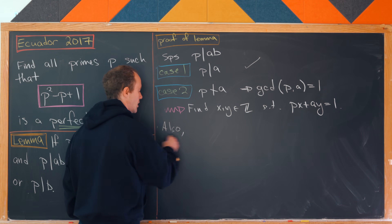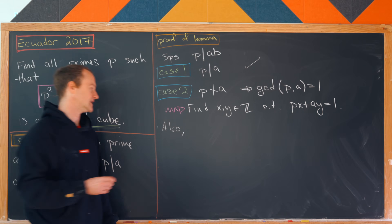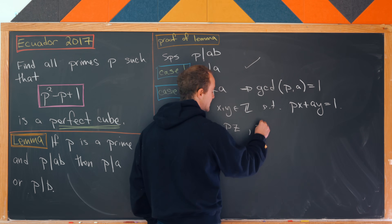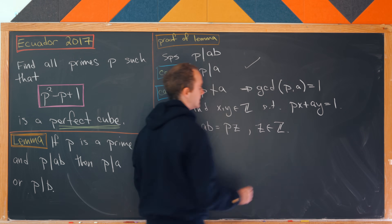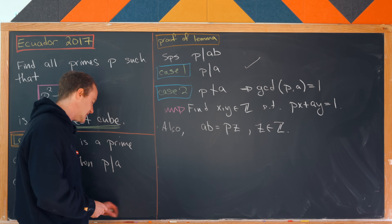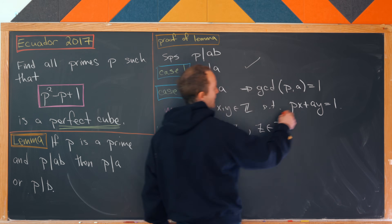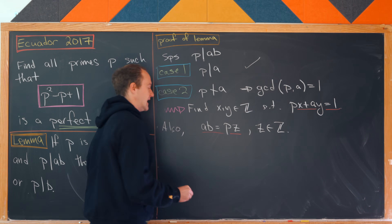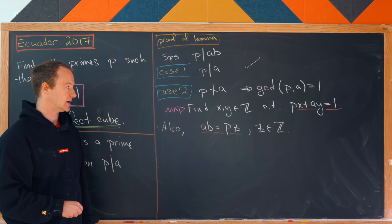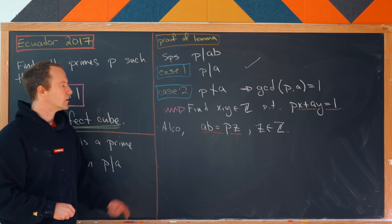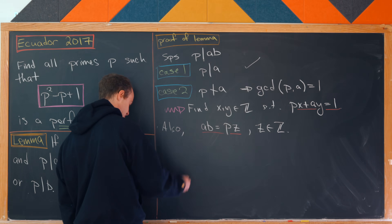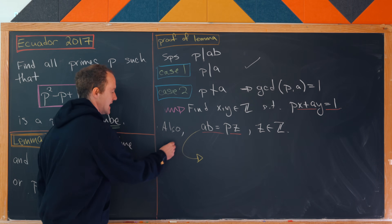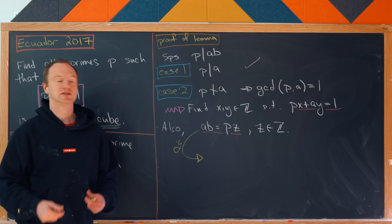We started by assuming that p divides a times b, which means that a times b equals p times z for some integer z. Now we'd like to put these two things together — the linear combination of p and a, together with the fact that a times b is a multiple of p. We could take this equation and multiply it by y. If we multiply by y we'll have a term that looks like a times y, and then we can put these two equations together.